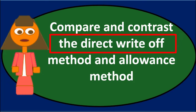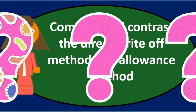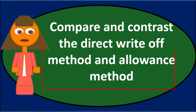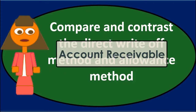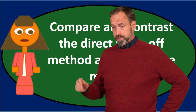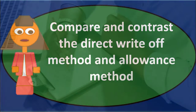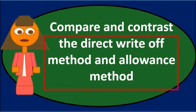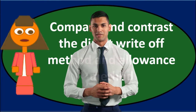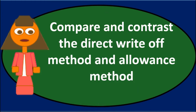We will compare and contrast the direct write-off method and the allowance method. We need to first establish what these methods are related to, and then explain the problem they are trying to solve, how they each solve it, and what the pros and cons of either method are.